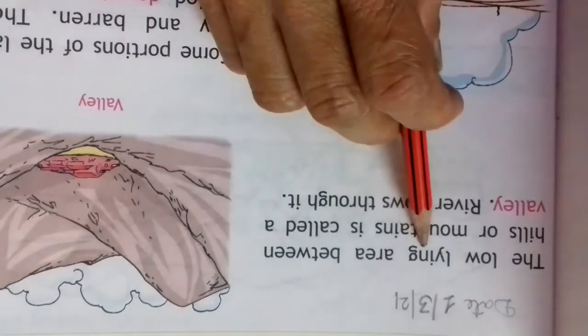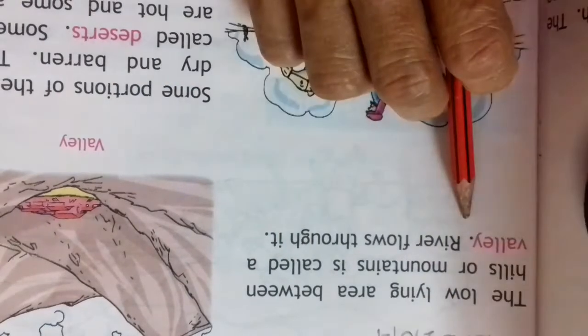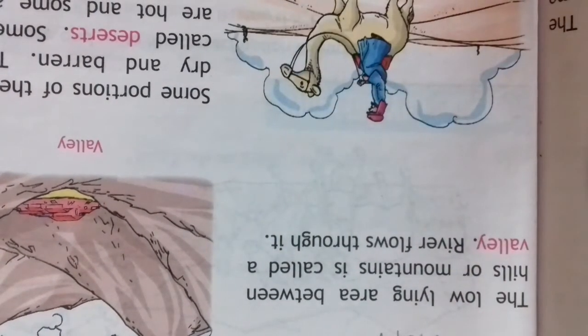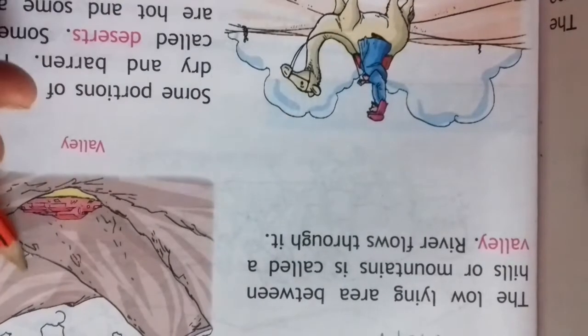The low-lying area between hills and mountains is called a valley. The rivers flow through it.